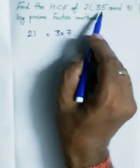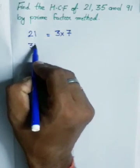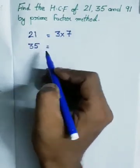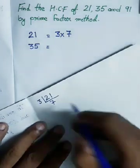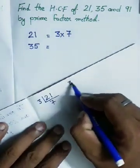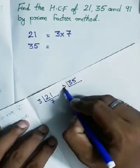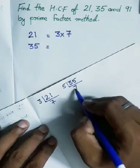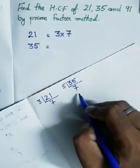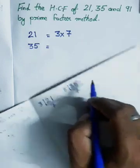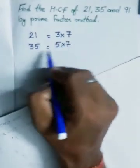Similarly, take out the prime factor of 35. So 5 divides 35: 5 times 7 is 35. And 7 is not divisible by any other number. So the prime factor of 35 is 5 into 7.